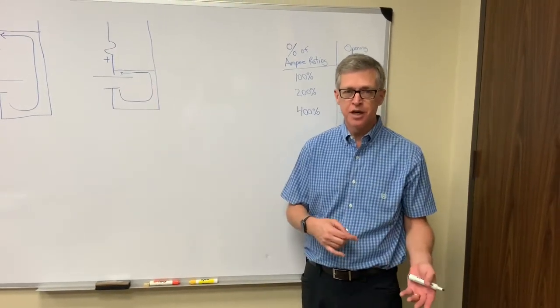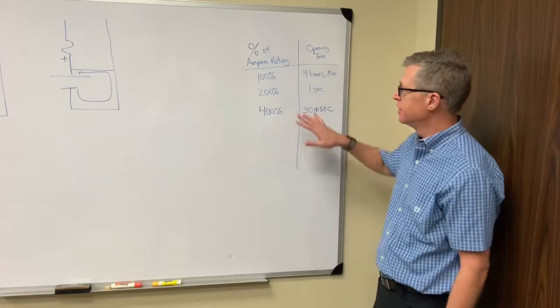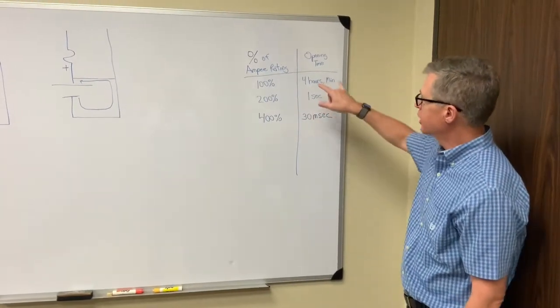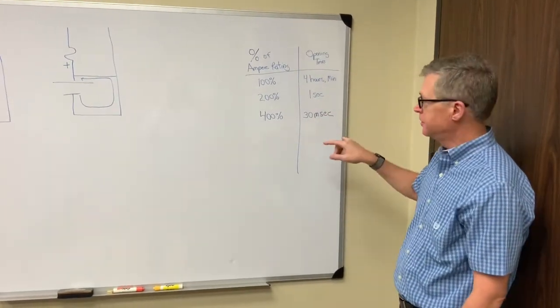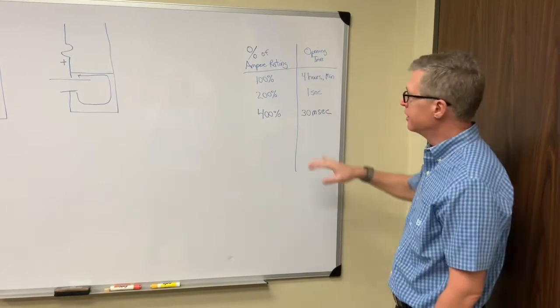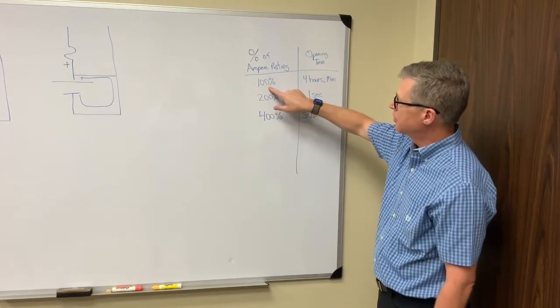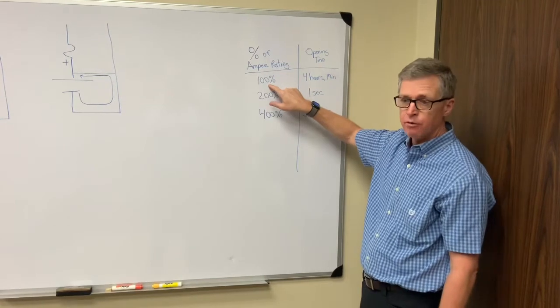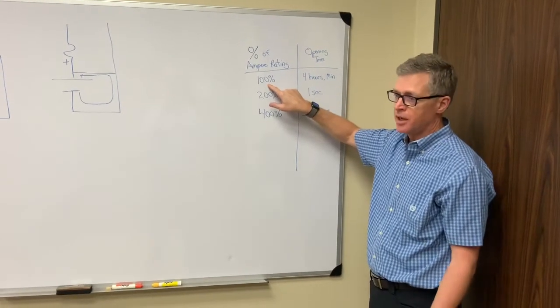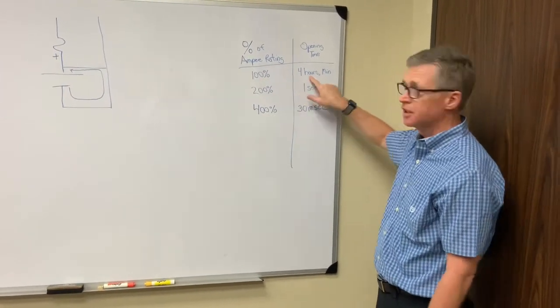Luckily, all the fuses being used in batteries will open very quickly. This chart shows the time to open for a fuse that are typically used in a battery. You see here, if you're pulling about 100% of the ampere rating of the fuse, 1 amp, 5 amps, 10 amps, it's going to take 4 hours.